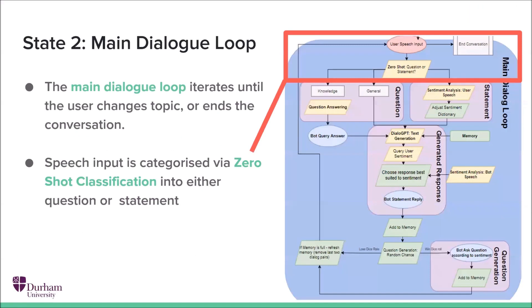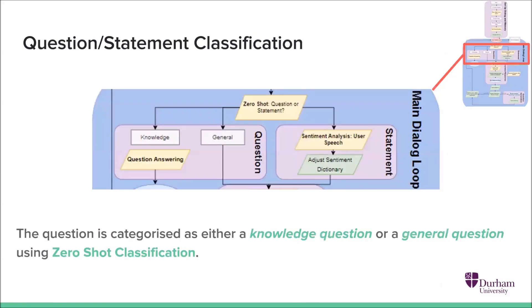So let's have a look at the main dialogue loop. The user always speaks first, and we classify the user's speech into either a question or a statement, again using zero-shot classification.